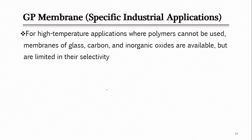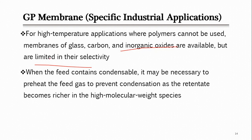Although polymeric membranes are widely used, for high-temperature applications above 200°C they are not recommended due to issues with glass transition temperature and other properties. For such applications, inorganic membranes — consisting of glass membranes, carbon membranes, or inorganic oxide membranes — can operate at high temperature, but they have limited selectivity compared to polymeric membranes.